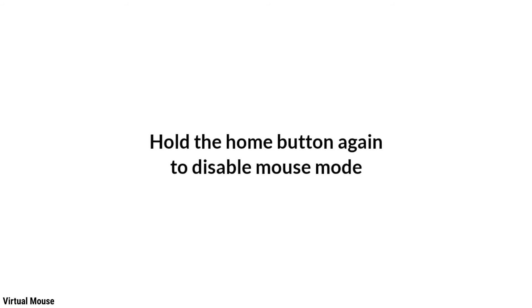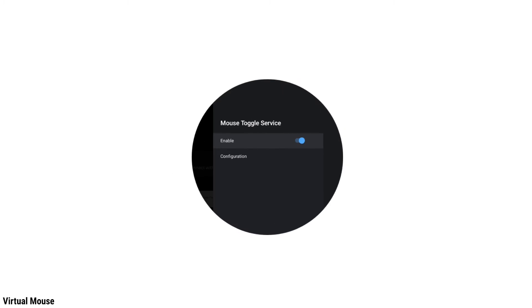Pressing and holding the Home button again will turn off the mouse mode. Due to some Android limitations, you may have to turn on the accessibility again when you power off the TV.